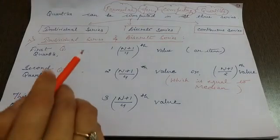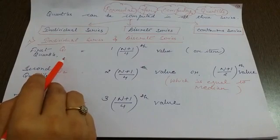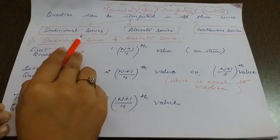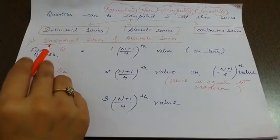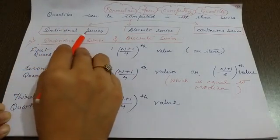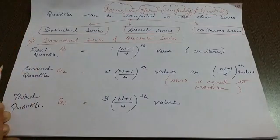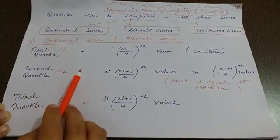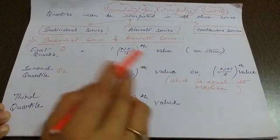Now let me explain the formula for computing quartiles. There are three main series: individual series, discrete series, and continuous series. In individual series and discrete series, the formula will be the same to calculate Q1, Q2, and Q3. Q1, the first quartile, is calculated using the formula: the (N+1)/4th value or item.